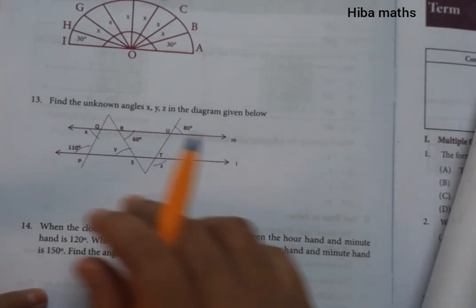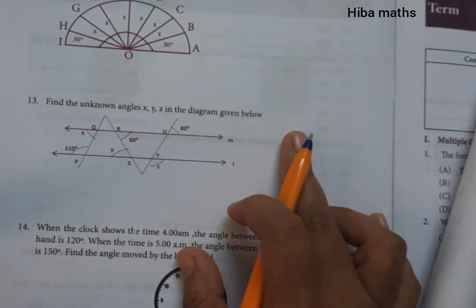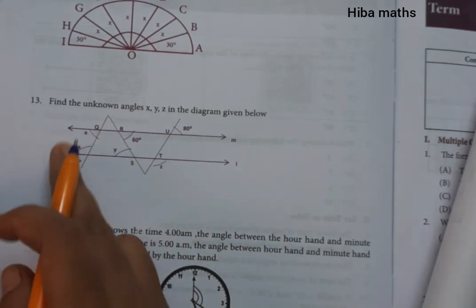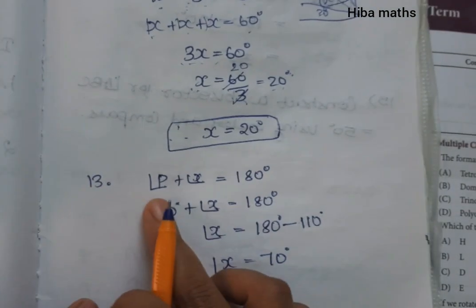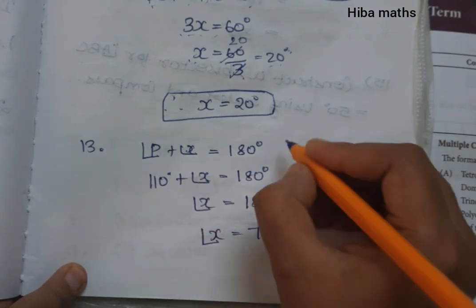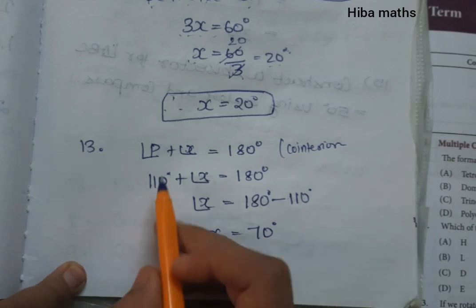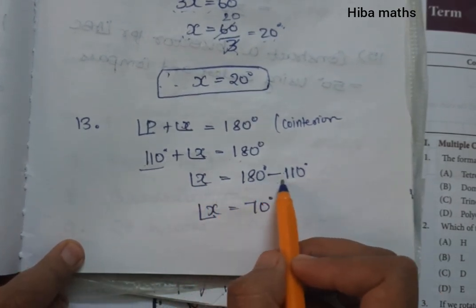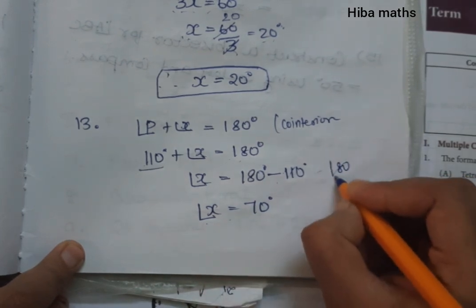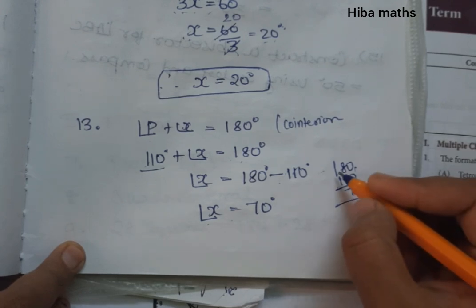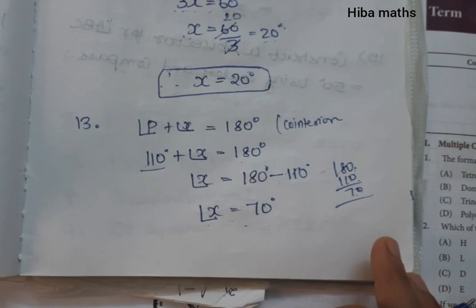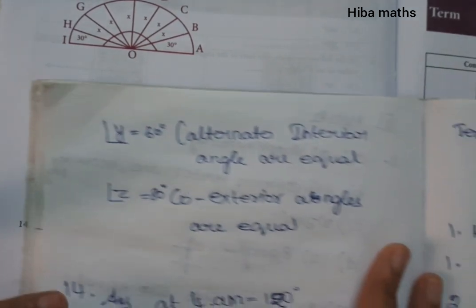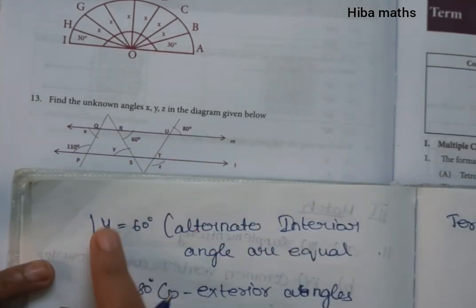Now let's find the unknown angles x, y, z in the diagram. For x: the angles are co-interior angles, so angle P plus angle x is equal to 180 degrees. That gives 110 degrees plus x equals 180 degrees, so x is equal to 180 minus 110, which is 70 degrees.